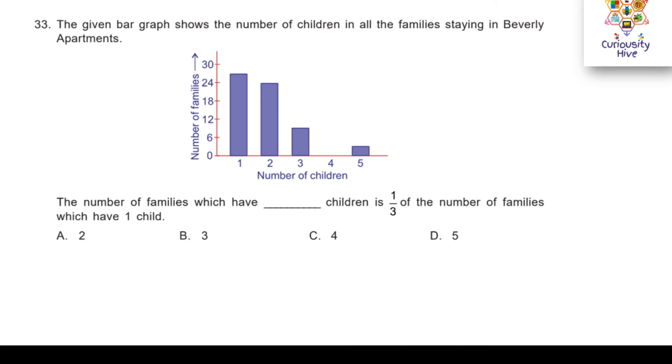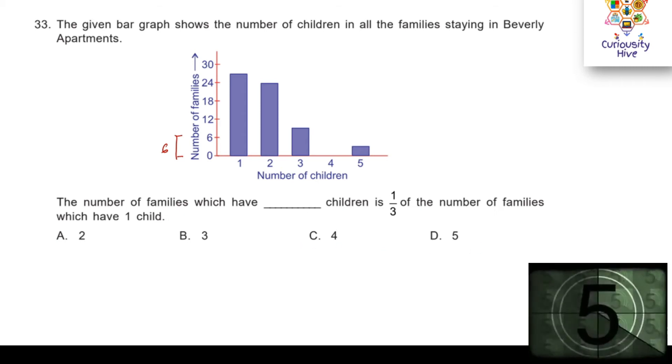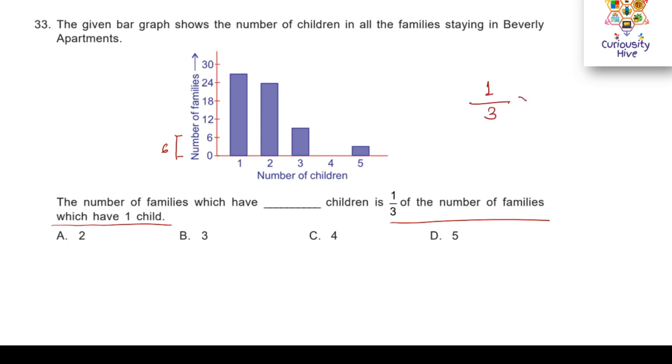Next question: the given bar graph shows the number of children in all the families staying in Beverly apartments. This is a bar graph here and the interval here per unit is 6. The number of families which have dash children is 1 third of the number of families which have 1 child. We have to find what is the answer here from the options given below. We need to find how much is 1 third of the number of families which have 1 child. This is the bar graph. It is somewhere in the middle and we know that this interval is 6 units. So the middle is 3 units. This point would be 24 plus 3, that is equal to 27. 1 by 3 times 27 is equal to 9.